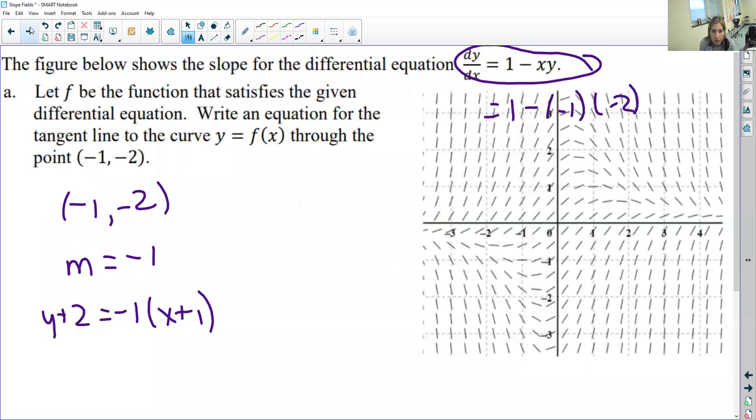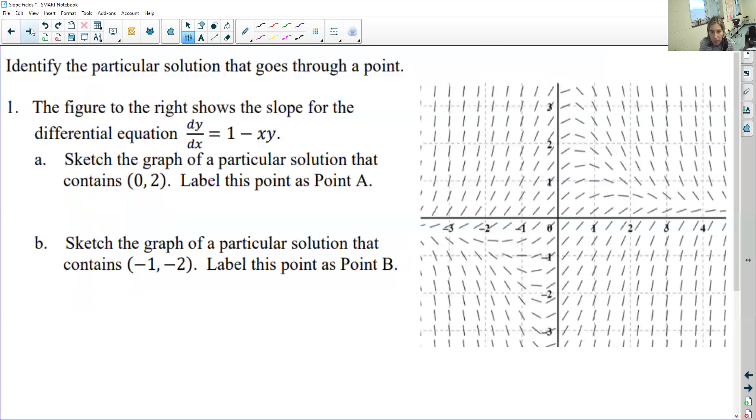Alright, so let's talk about, we didn't get to quite finish this one. So here, this is a slope field for this equation, dy/dx equals 1 minus xy. Then they just ask you to sketch a graph of a particular solution that contains the point 0, 2. So if you just look at the point 0, 2, they're just asking you to kind of sketch the slope. So just try to follow the path that would kind of lead you there.